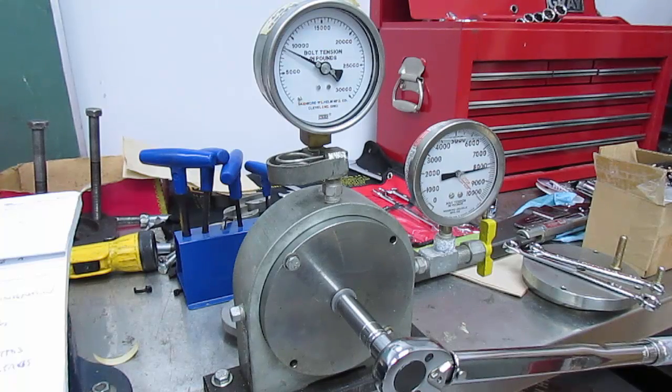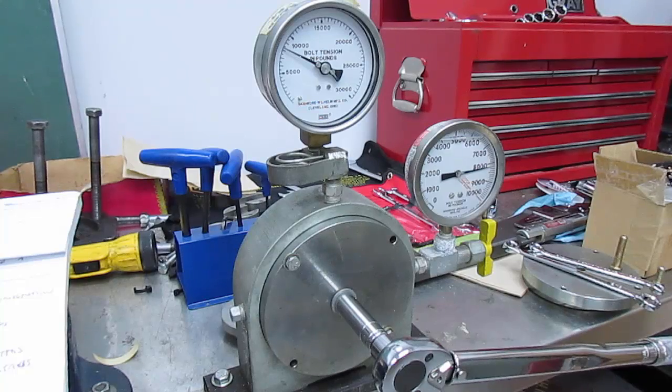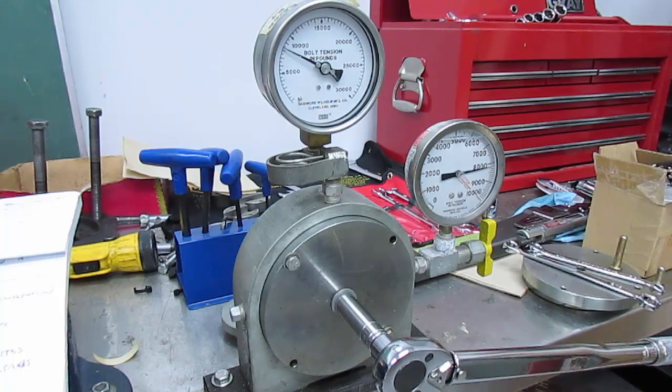So in this particular case we still haven't exceeded the yield stress, but if you don't use a torque wrench, maybe the torque rating is different, you could yield this bolt. So what does all this mean for this bolt or more importantly your wheel studs?